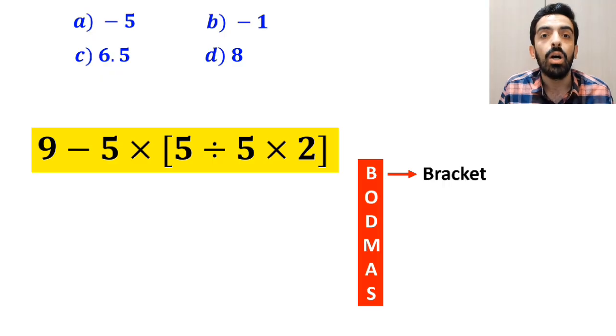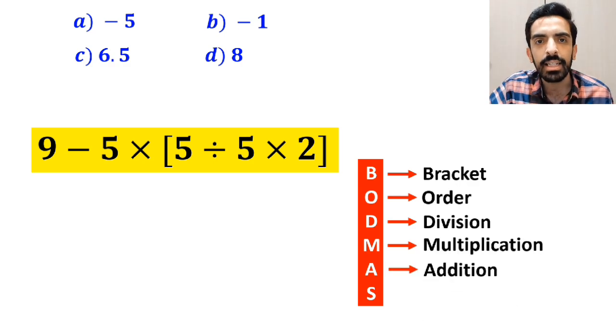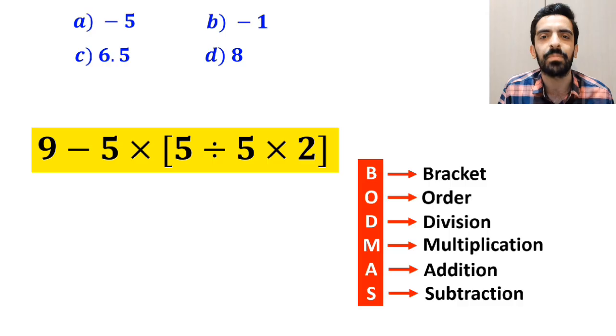B stands for bracket. O stands for order. D stands for division. M stands for multiplication. A stands for addition. And S stands for subtraction.